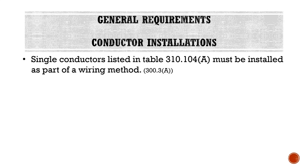Starting off, we're looking at general requirements for conductor installations. Single conductors listed in Table 310.104A must be installed as part of a wiring method. These single conductors — your typical everyday conductors such as THHN, THWN, XHHW — individual conductors must be installed in some type of conduit, cable tray, or part of some type of cable assembly. They can't just be run on a wall or ceiling and supported on their own.